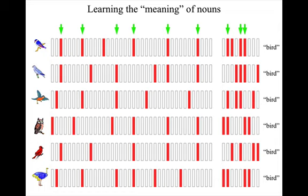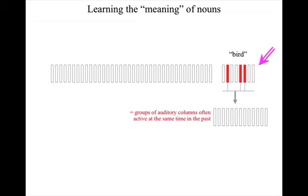Although different groups of columns are active during each experience, some visual columns are active relatively often and some auditory columns are also active relatively often, as I've shown by the green arrows. This means there's a group of visual columns often active at the same time as a group of auditory columns. And this pattern of activity can be exploited because the activity of the group of auditory columns that have often been active at the same time in the past, such as those often activated by hearing the word 'bird',